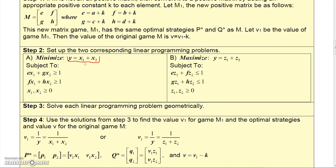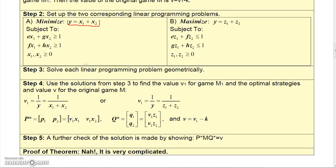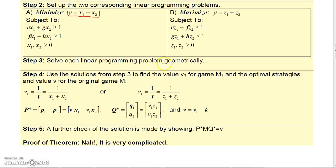If we take a problem, we'll solve that geometrically, and then we'll use the solutions from step 3 to find V1 for M1 and the optimal strategies and value V for the original game. V1 is going to be 1 over Y, which is 1 over X1 plus X2. You can also get it by doing 1 over Z1 plus Z2. It's going to be the same whether you use X1 plus X2 or Z1 plus Z2.